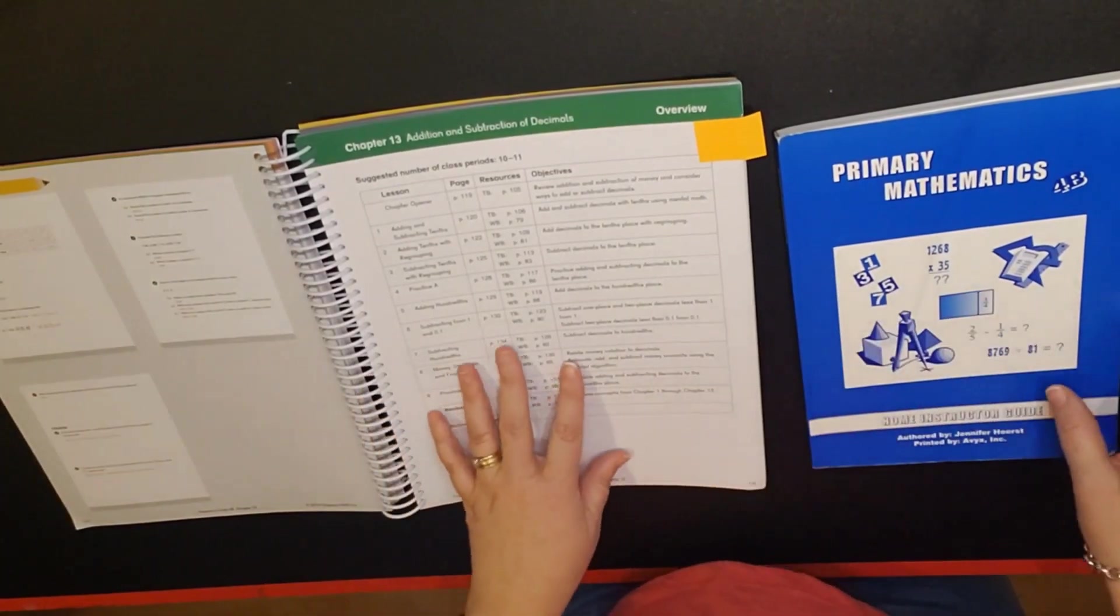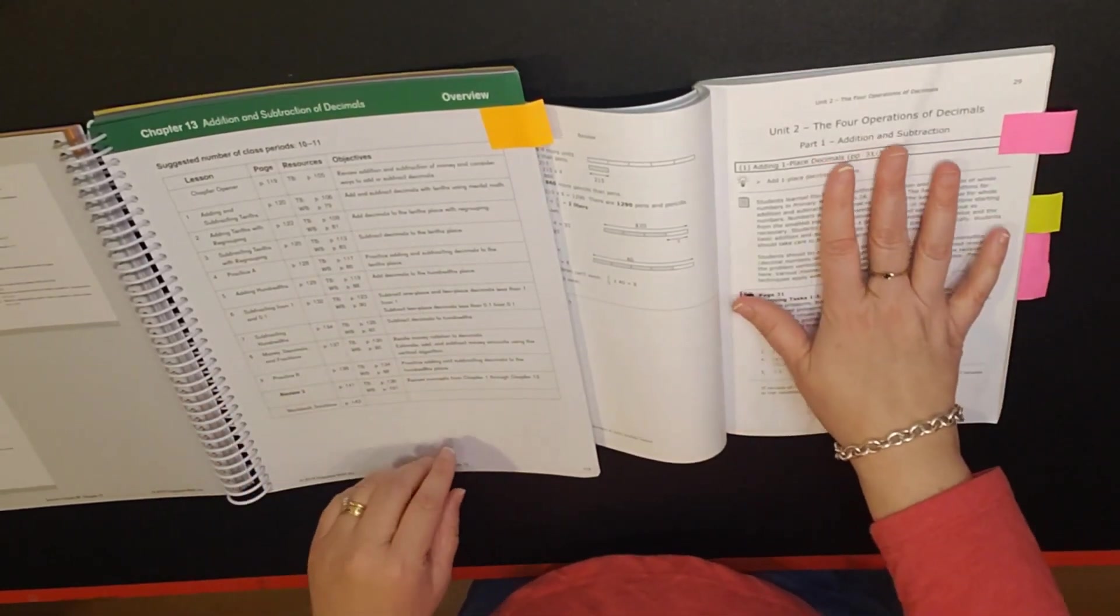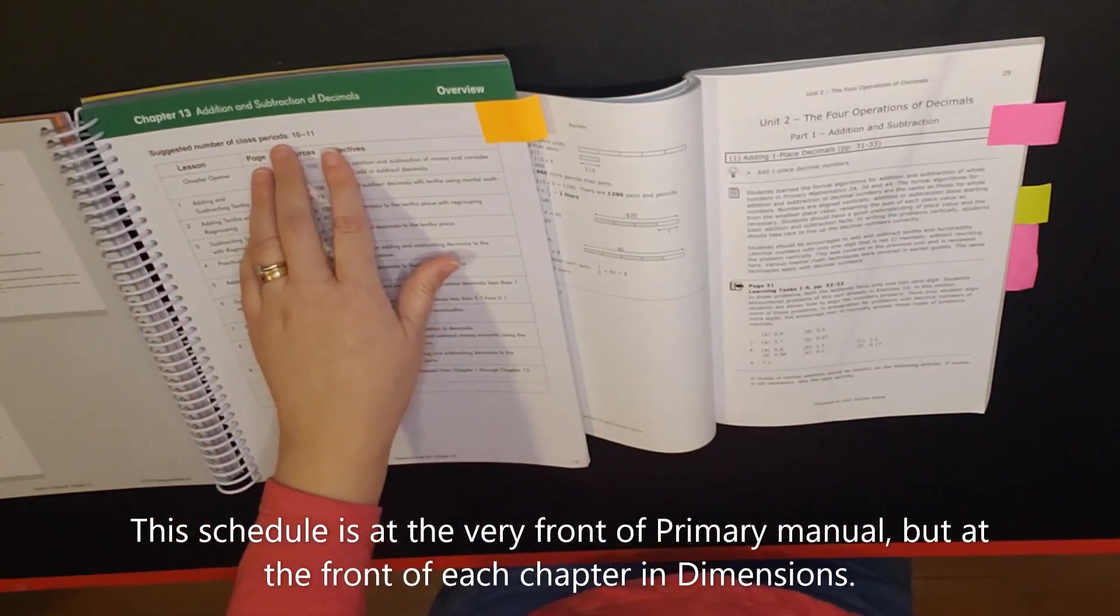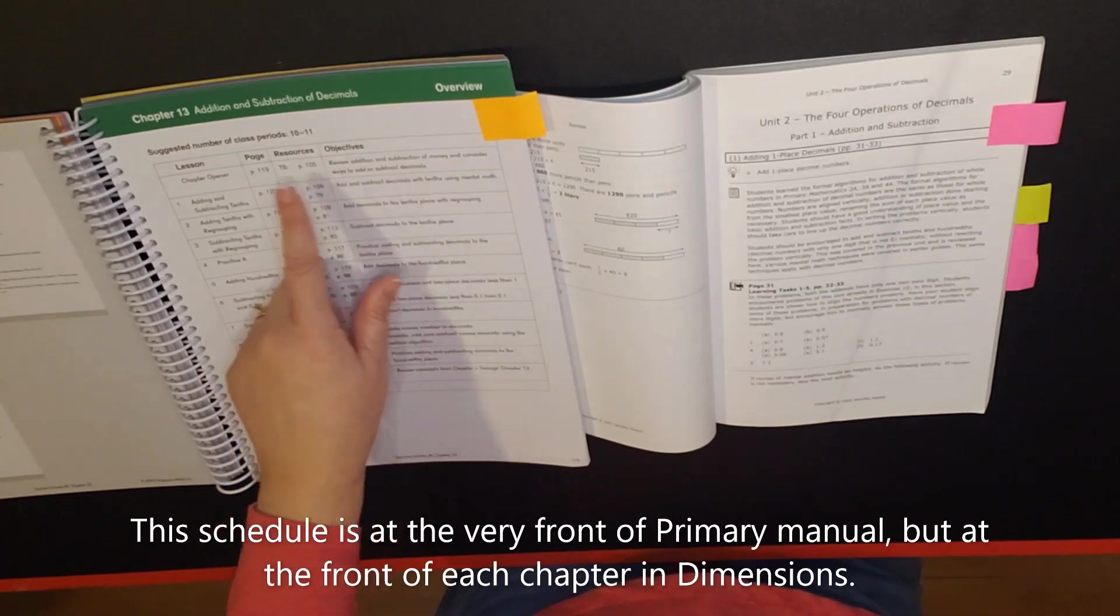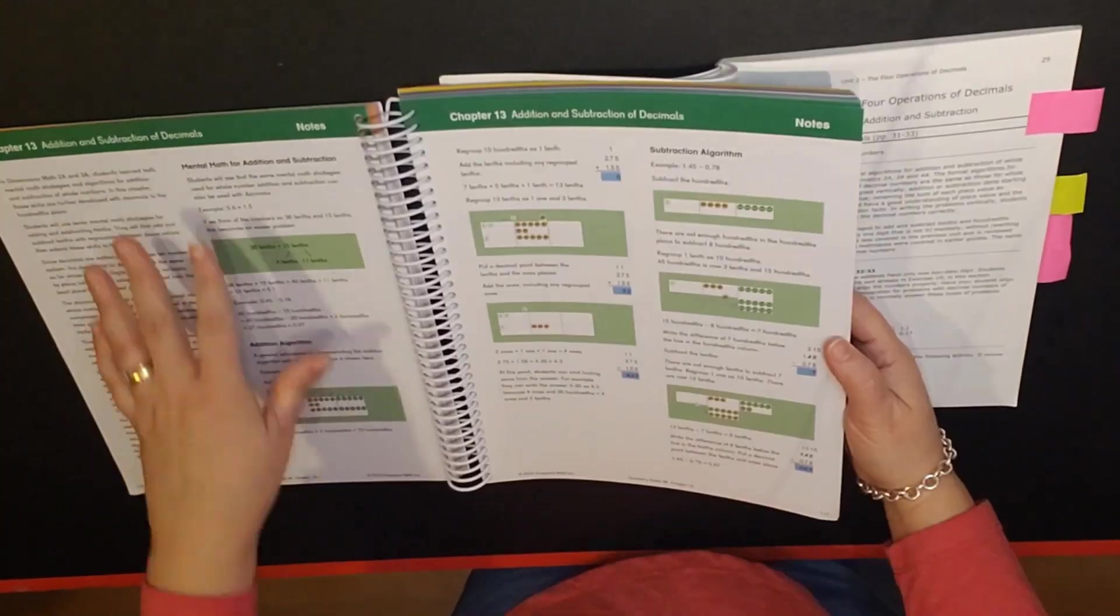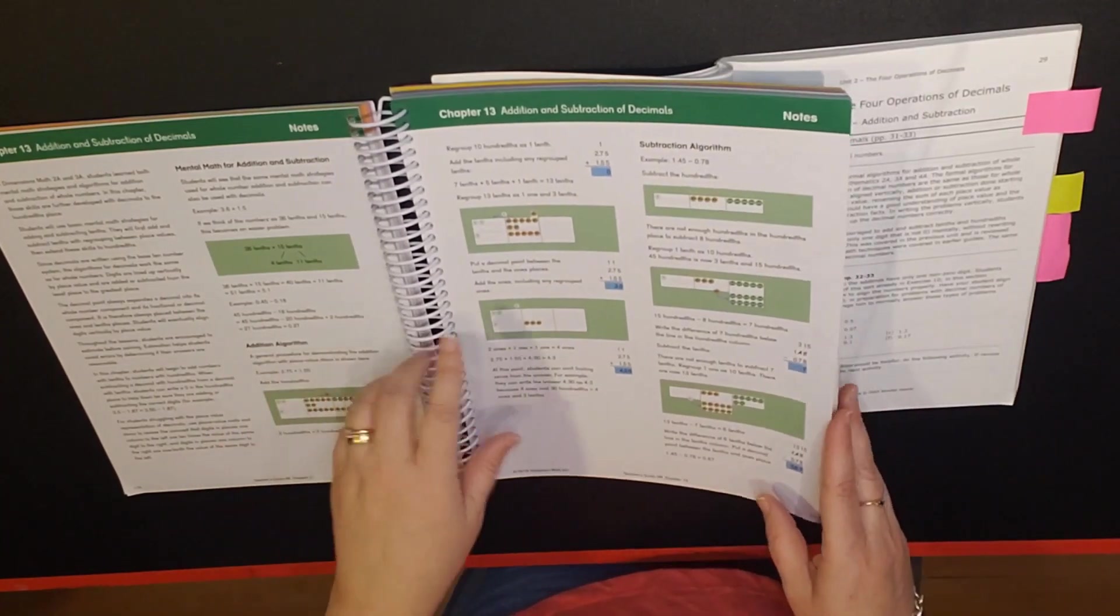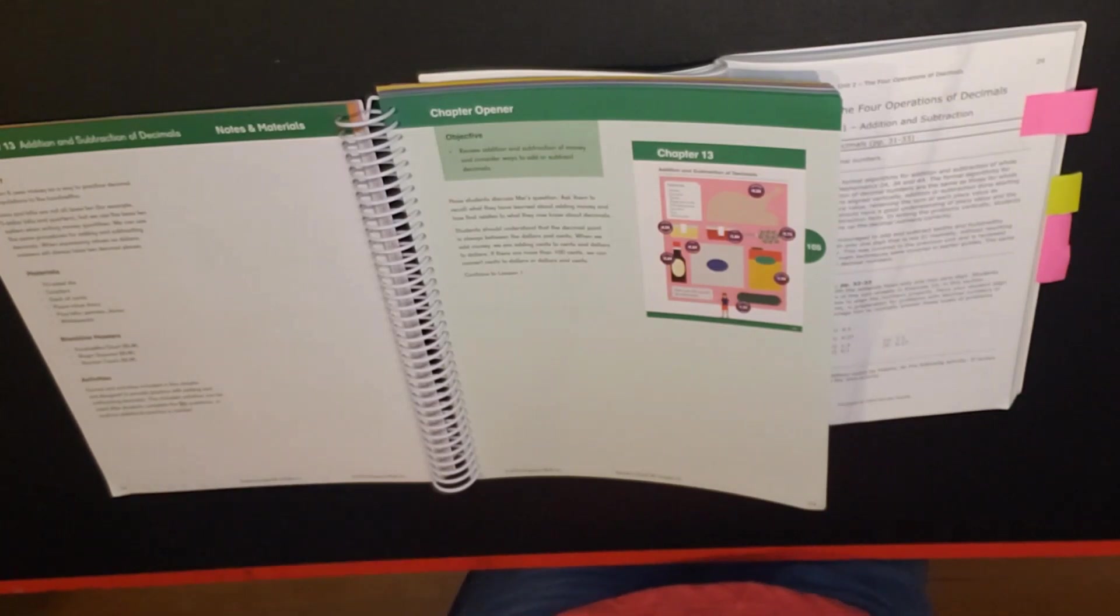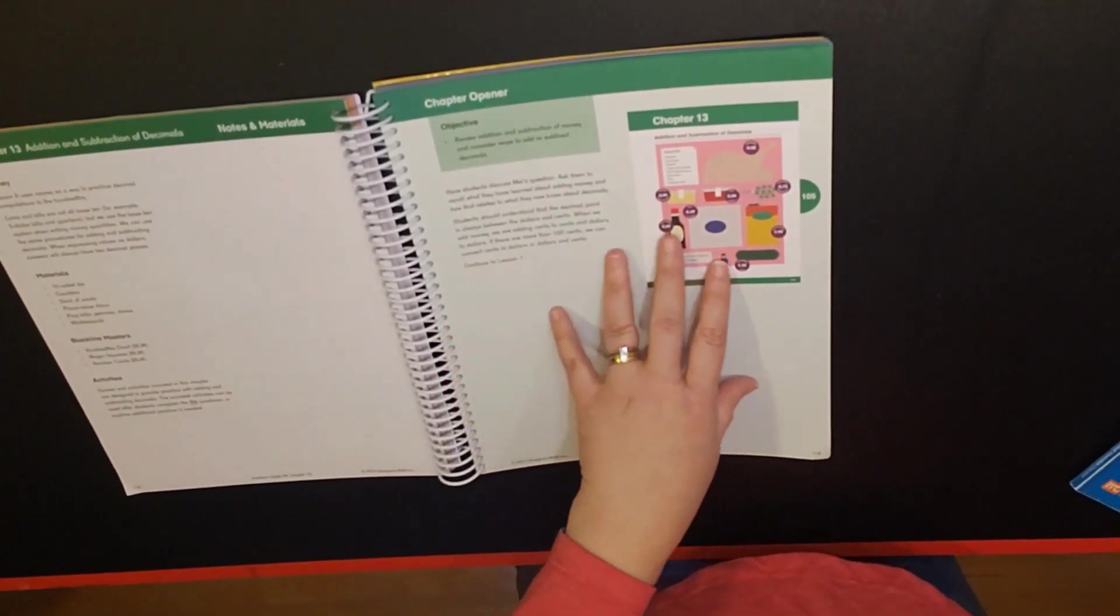So let's look at a lesson. We're going to talk about addition and subtraction of decimals. In dimensions you have your suggested number of class periods, 10 to 11, and then they walk through the page within the teacher's guide, your textbook page and your objective. If you have a workbook they'll tell you the workbook page as well. Then what they do is they go into your chapter overview. This will give you just a general overview talking about mental math, then they talk about addition, subtraction, materials, and then here's your black line masters. Games and activities are included in the chapter. They do offer activity suggestions within each chapter.